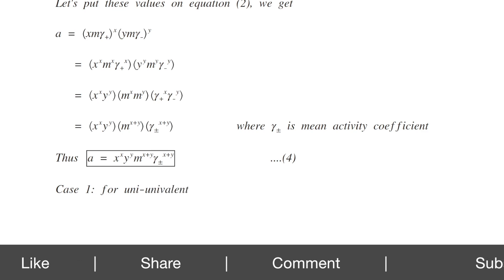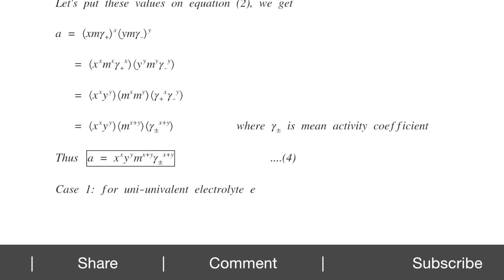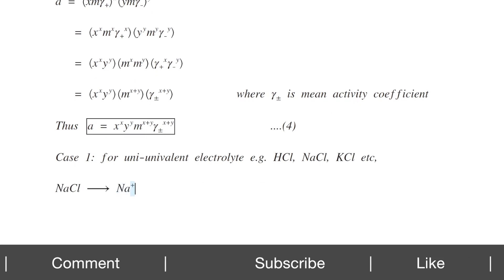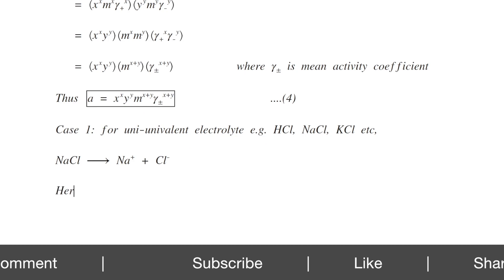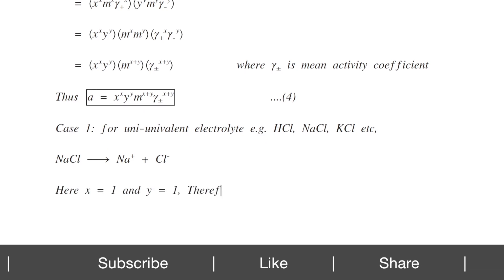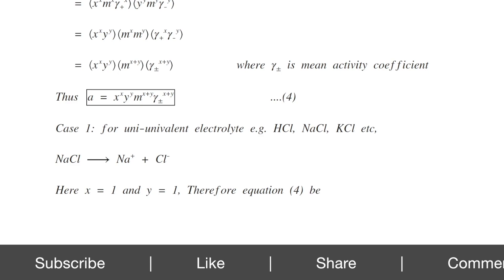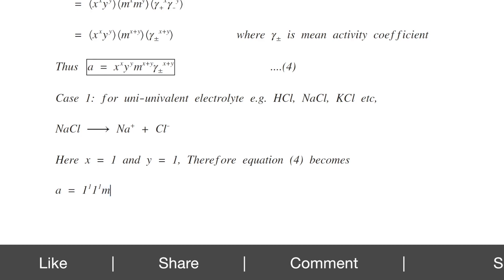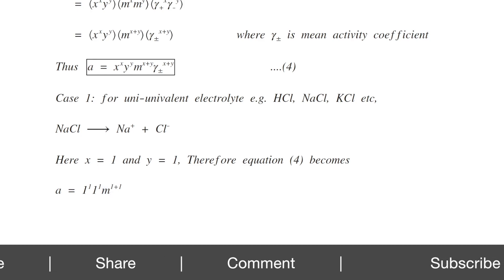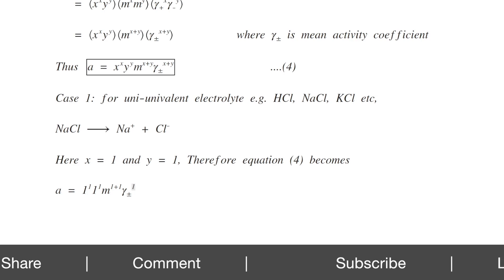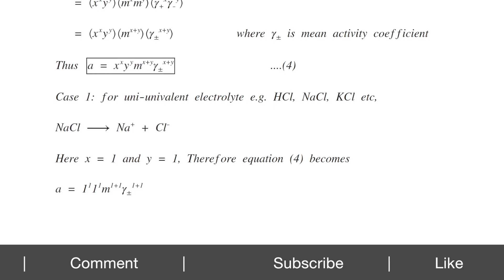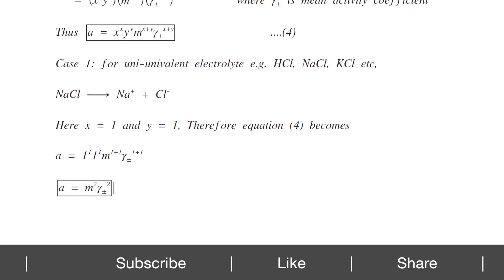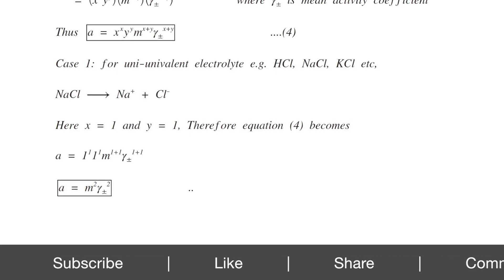Case 1: uni-univalent electrolytes — examples are HCl, NaCl, KCl. Sodium chloride produces Na⁺ and Cl⁻ ions, so X equals 1 and Y equals 1. Equation 4 becomes A equals 1^1 × 1^1 × M^(1+1) × Gamma±^(1+1), which simplifies to A equals M² · Gamma±². This is equation number 5.